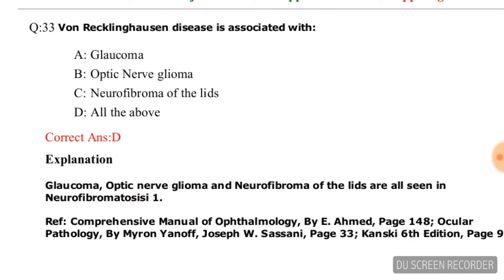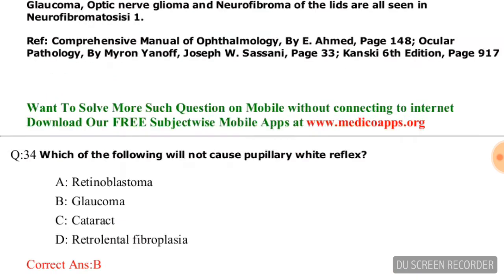Question number twenty-nine: Bony wrinkling is associated with which conditions? Options are glaucoma, optic nerve glioma, neurofibroma of the eyelids, or all of the above. The correct answer is all of the above, option D.